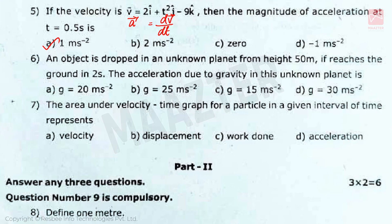Sixth question is: An object is dropped in an unknown planet from height 50 meter. If it reaches the ground in 2 seconds, the acceleration due to gravity in this unknown planet is. Answer is g is equal to 25 ms⁻². In this question, height h is 50 meter and time is 2 seconds. For free falling body we use the formula h is equal to 1/2 g t². Using this formula and substituting values, we get 25 ms⁻².